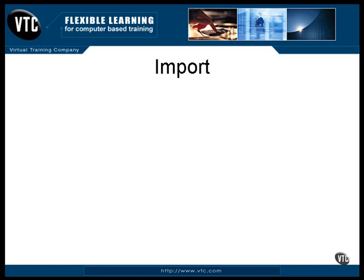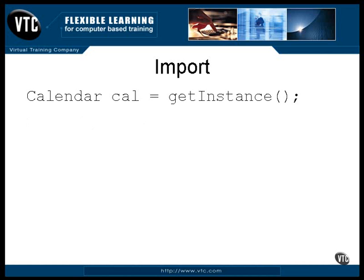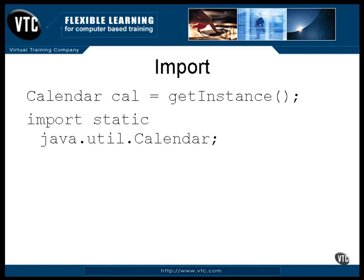With Java 5.0, a new capability has been added to the import statement. Let's say you have a class that contains a statement where a getInstance method is being called to return an object. To find it, you first check all the methods in this class, and if it isn't there, you check all the methods of all the super classes. If it isn't there, you look at the import statements. The keyword static following the keyword import means that all the static elements of this class can be accessed syntactically just as if they were defined locally. This means the method can be found in there.